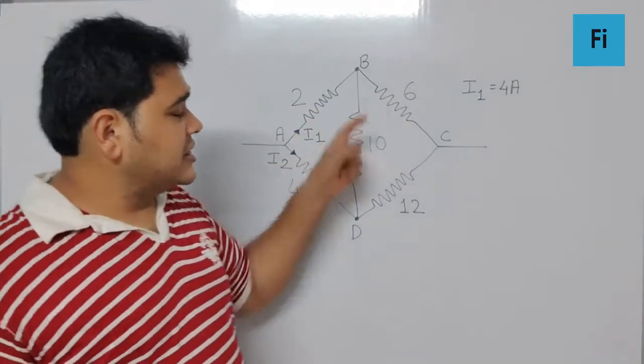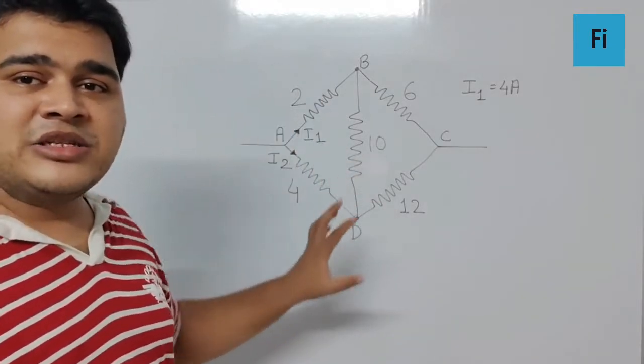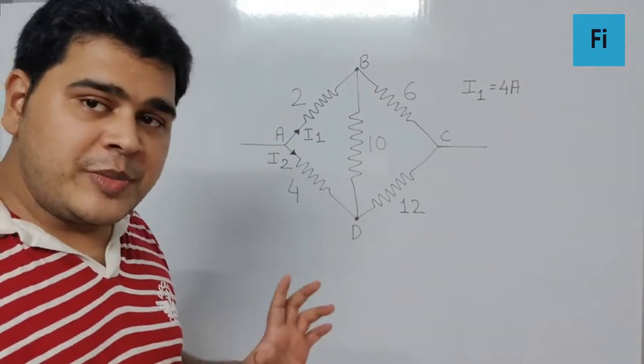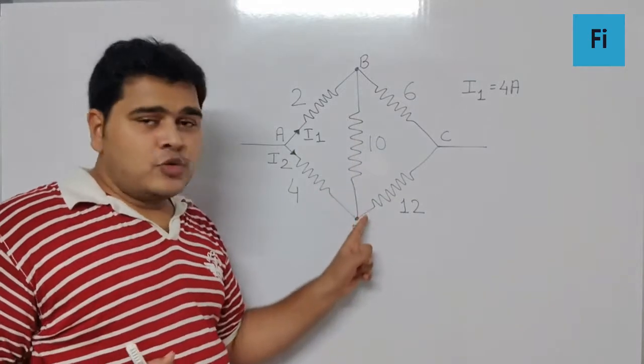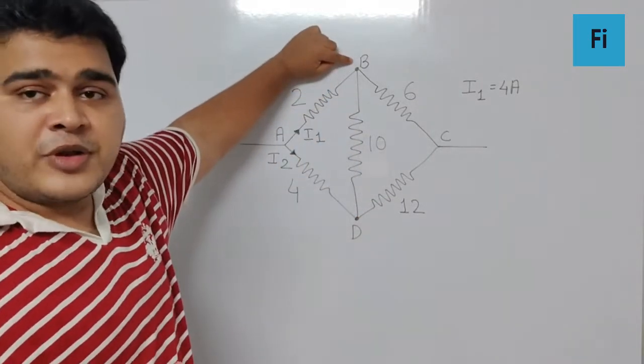is half. This is 6 and 12, this is also ratio as half. This means this is a balanced Wheatstone network, which means the current through 10 ohm is going to be 0, and the potential difference or potential at...